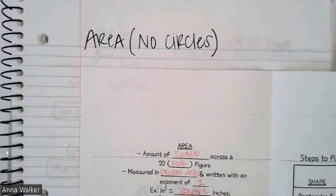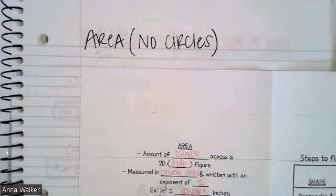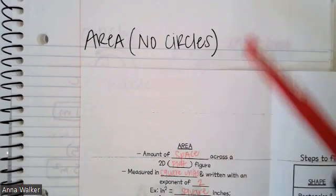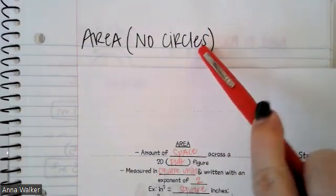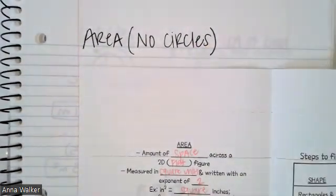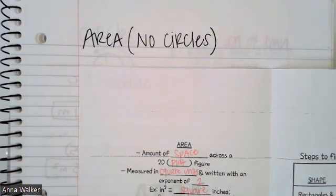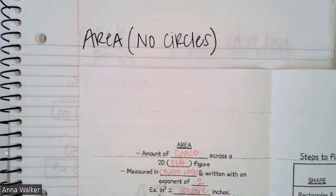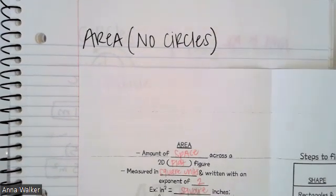Good morning, students. So in this video, we are going to talk about finding the area of pretty much every shape — except a circle. The next video, I will show you how we find the area and perimeter of circles because they're very unique. So in this video, we're going to talk about how we find the area of all the other shapes.